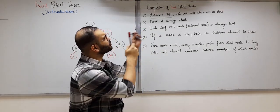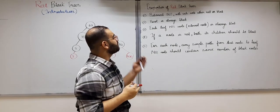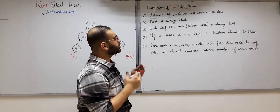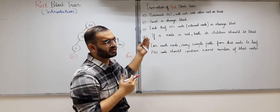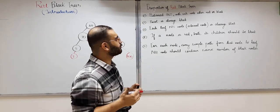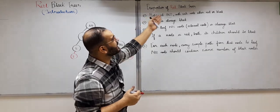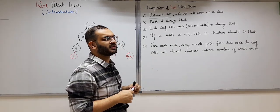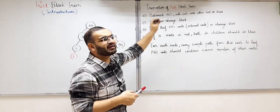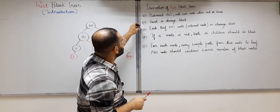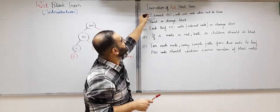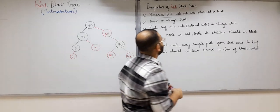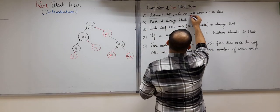Now let us look at some properties of red-black trees. We will learn these properties because they will be helpful when performing insert and delete operations, as those operations take these properties into consideration. The first property is that a red-black tree is a balanced binary search tree. We already know this, and later I will also prove why a red-black tree is a balanced binary search tree when it follows the rest of the four properties.